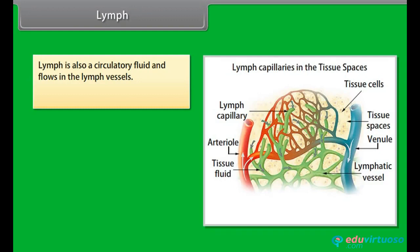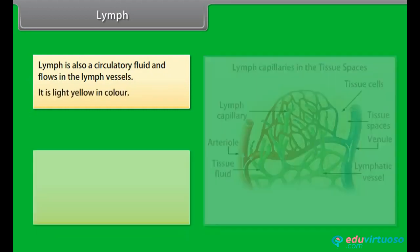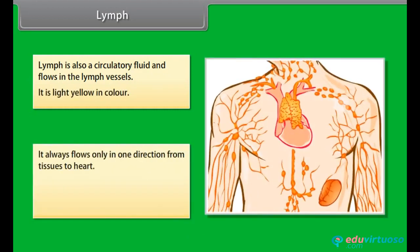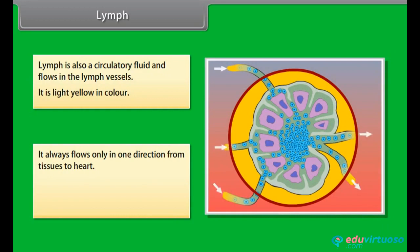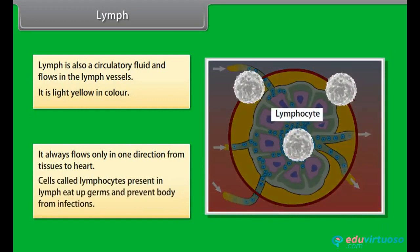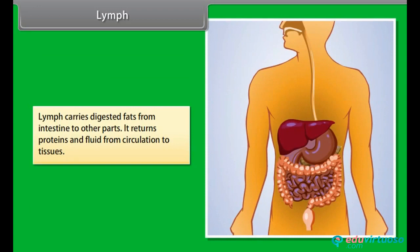Lymph is also a circulatory fluid and flows in the lymph vessels. It is light yellow in color and always flows only in one direction — from tissues to the heart. Cells called lymphocytes present in lymph eat up germs and prevent the body from infections. Lymph carries digested fats from the intestine to other parts and returns proteins and fluid from circulation to tissues.